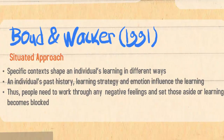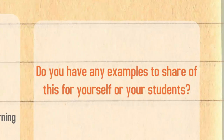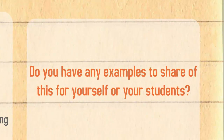Moving on to Boot and Walker, who take a situated approach to learning. This approach states that specific contexts shape an individual's learning in different ways. An individual's past history — also known as their biography — their learning strategy and their emotion influence their learning. Our humanity has the biggest impact on our learning, and combined with technology, learning becomes a very complex situation for adult learners. People need to work through any negative feelings they have about learning, school, or technology so that they can create new learning situations.